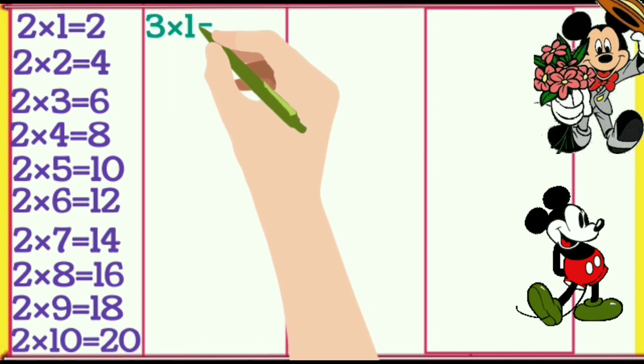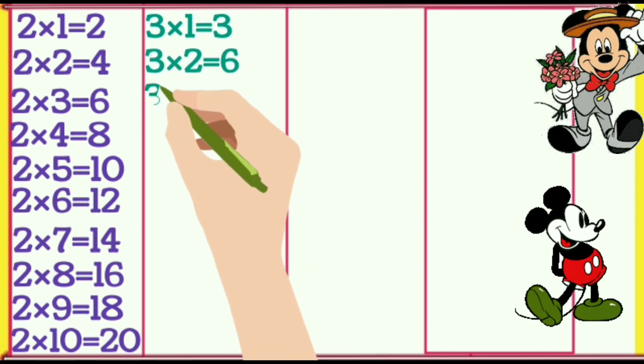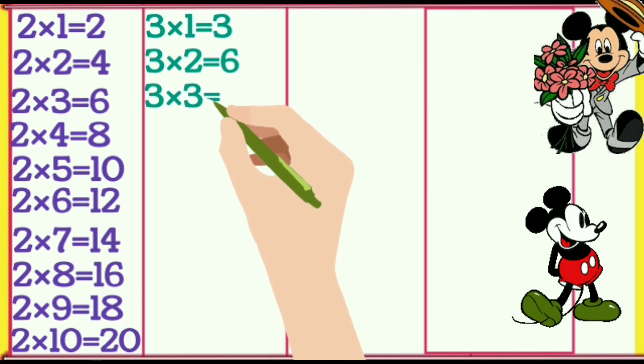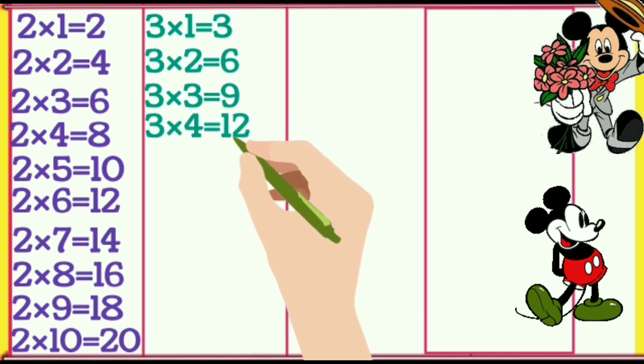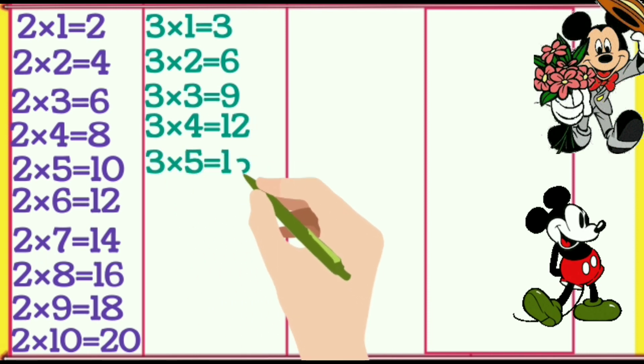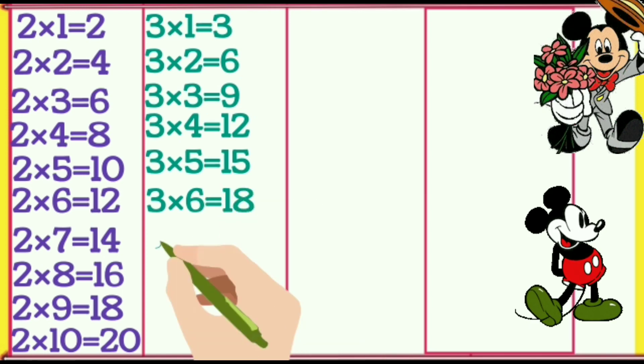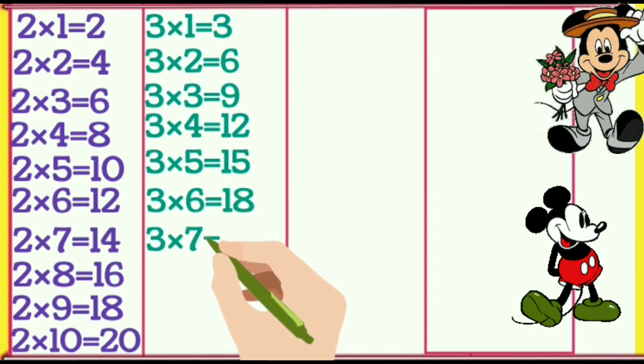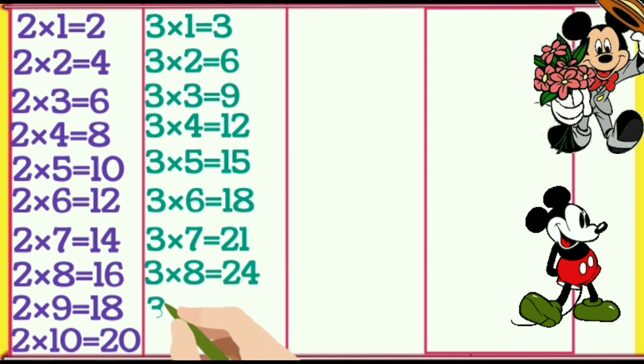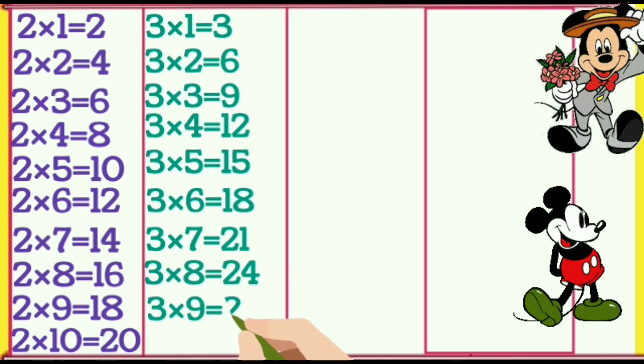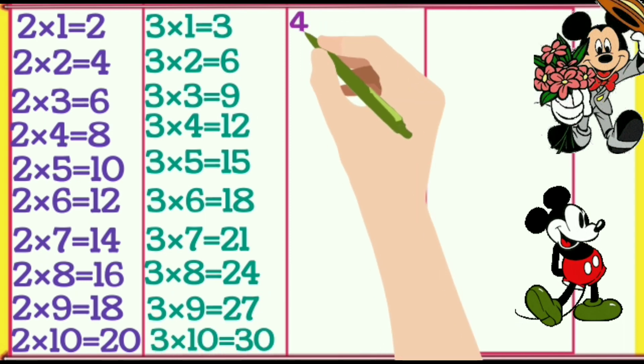3×1=3, 3×2=6, 3×3=9, 3×4=12, 3×5=15, 3×6=18, 3×7=21, 3×8=24, 3×9=27, 3×10=30.